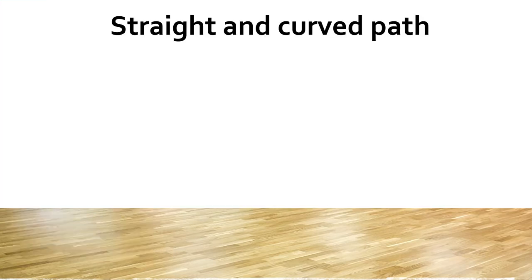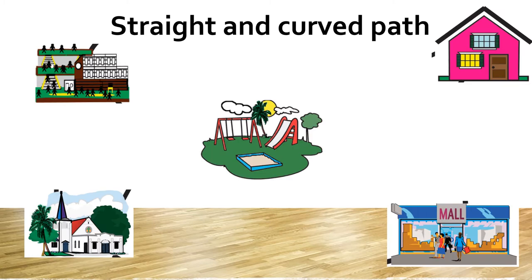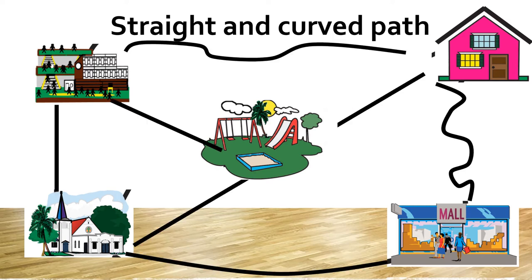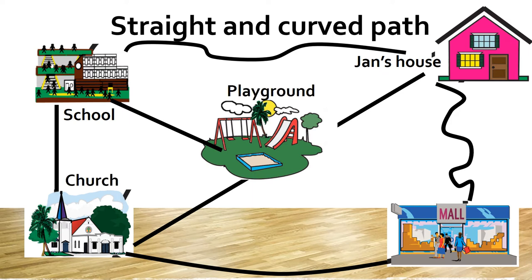Let us look at straight and curved paths on a map of a community. Can you identify the different places shown in this community? We have the school, Jan's house, the playground, the church, and the mall.